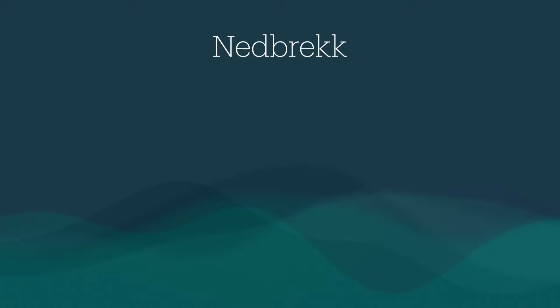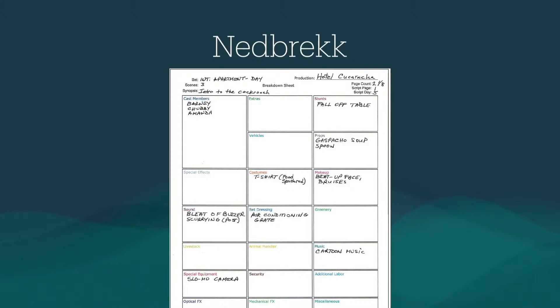Da deler man opp produksjonen i mindre biter, ofte ned til hver enkelt scene, og ser nærmere på alle detaljene. På den måten kan man planlegge svært nøye og unngå feil trinn. Da bruker man gjerne et eget skjema som kan settes som dette. Relevant informasjon fra skuespillere til rekvisitter fylles ut. Skjemaet er høyde for absolutt alt som trengs for opptak av den aktuelle scenen.